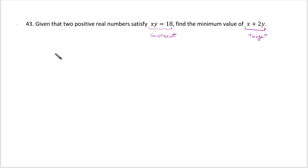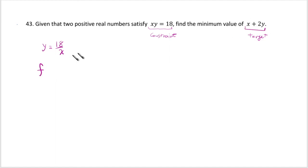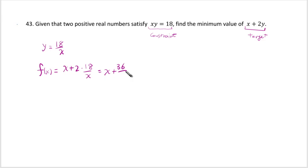The way you solve optimization questions is to first solve the constraint for one of the variables. Let's divide both sides by x and get y = 18/x. Then use that to replace the variable in the target to make it a function of a single variable. If you replace y by 18/x, it becomes x + 2(18/x), which is x + 36/x.